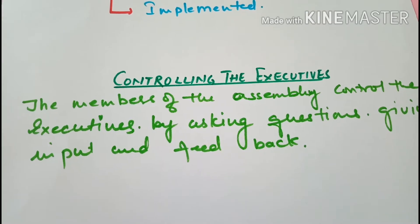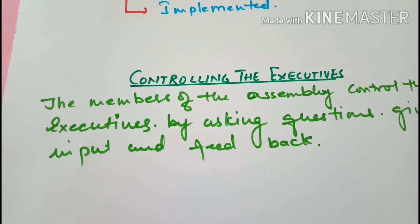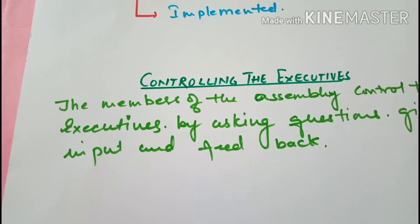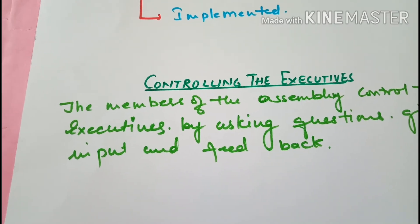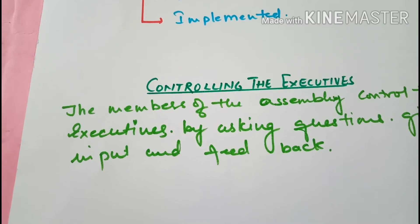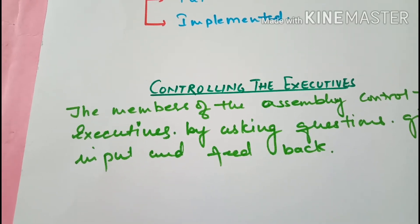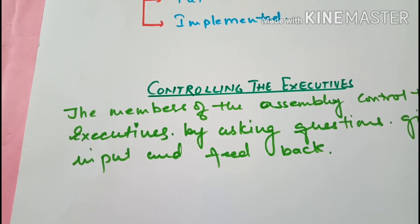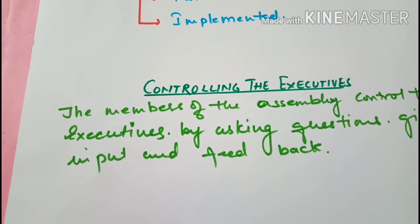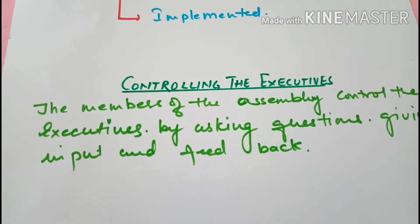Controlling the executives. Children, the chief minister and council of ministers have a lot of powers. So the assembly members control them by asking questions and asking about the feedback of their policies which have been implemented. So this is how they control the executives.